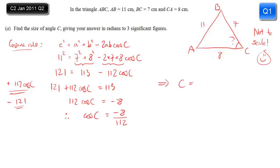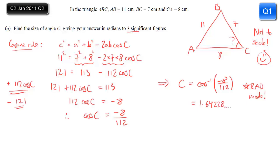The last step to find an angle using trig is always to use the inverse function, so C is cos⁻¹ of minus 8 over 112. Just be careful - this is a question about an angle in radians, so make sure you're in radians mode. Assuming that you are, type that in just as you see it, and you get the answer 1.64228... But we want it to 3 sig figs, so round it to 1.64 radians.